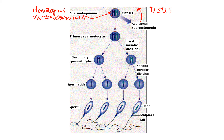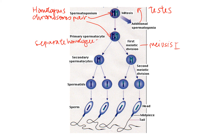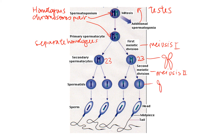When we undergo mitosis, we produce a clone cell — homologous chromosomes still pairing up. Now we're undergoing meiosis 1, the first meiotic division, separating homologous chromosomes. That means we now have 23 chromosomes in the secondary spermatocytes. But these chromosomes are still double-stranded, still in a replicated state. So we now need to undergo meiosis 2, the second meiotic division, which allows us to separate these double-stranded chromosomes into single-stranded chromosomes.